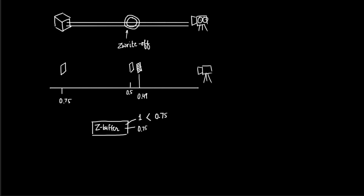Now comes the turn of the outline. The outline pass comes first because in the outline shader the first pass is the outline pass. The outline pixel is at 0.49 distance, which is less than 0.75, so the Z-test will pass and the color buffer will be written — we will see the color of the outline. But because Z-write is turned off for the outline pass, the 0.49 value will not be written into the Z-buffer, so it will still contain 0.75.